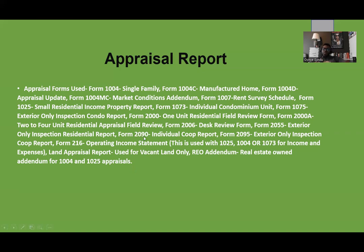Residential form 2090 is for co-ops. Co-ops and condominiums are relatively similar, but for those looking to get into the underwriting or mortgage world, understand that the key difference between a co-op and a condo is that co-ops typically have a doorman and condominiums typically do not. Form 2095 is an exterior only inspection co-op report.